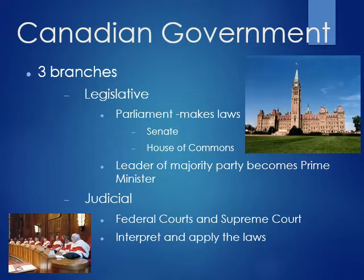Like the United States, Canada's government also has three branches — we'll talk about two of them here. The legislative branch is parliament. Parliament is the group that makes laws, and they have a House of Commons and a Senate. The House of Commons is elected by the people, just like the U.S. House of Representatives, but their Senate works a little bit differently.